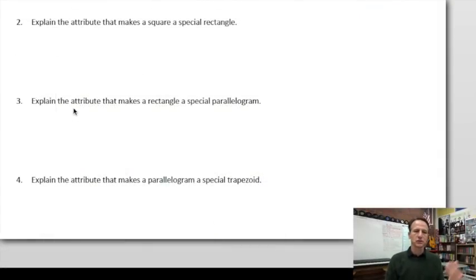Alright, so numbers two, three, and four, we're explaining attributes. We're writing. This is similar to lesson 14 homework where we had to do a bit of writing. And so when it says explain the attribute, it just means the quality, the characteristic. Like you have certain attributes. You're smart, you're good looking, you're fabulous. So those are your attributes. So we're going to explain the attributes or the one attribute that makes a square a special rectangle. So in other words, what's the difference between a rectangle and a square? What is it that makes it a square and not just a rectangle? Because a square actually is a specialized kind of rectangle. A square fits the definition of a rectangle, right? But it has something else. So what is that something else that makes it a square and not just a rectangle?